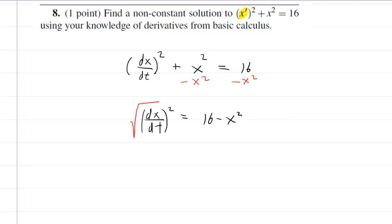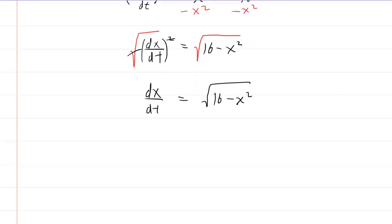And then we will take the square root on both sides. On the left side, the square will cancel with the square root. So now we have dx/dt is equal to the square root of 16 minus x squared. Next, we'll multiply both sides of the equation by dt. They'll cancel out on the left-hand side.